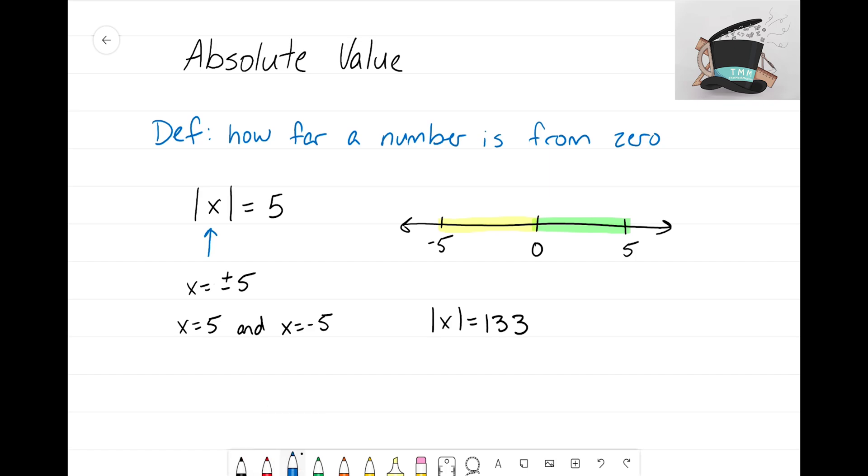Hopefully we're starting to see this pattern: x could either be plus or minus 133, or if you want to write it out the other way, x is 133 and x is negative 133.